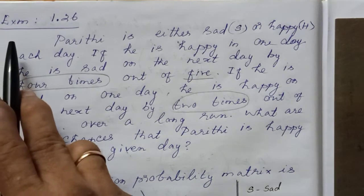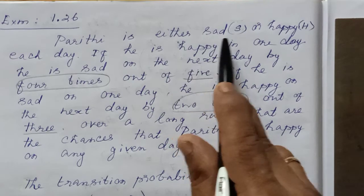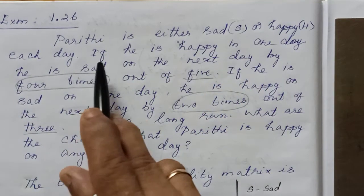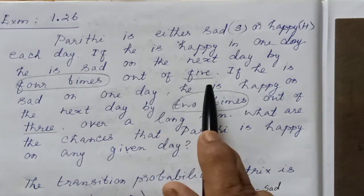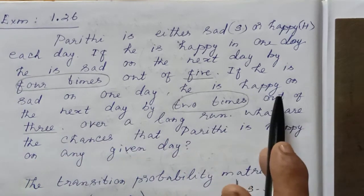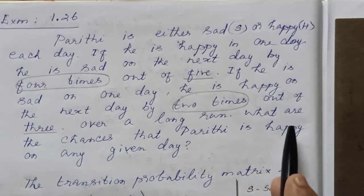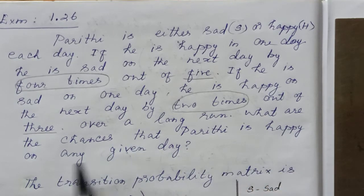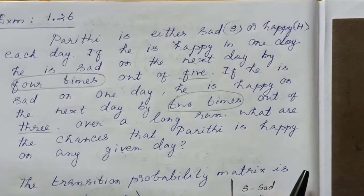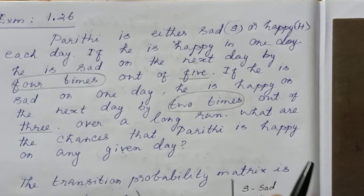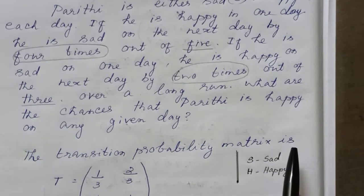Hi students, Example 1.26. Party is either sad or happy each day. If he is happy one day, he is sad the next day four times out of five. If he is sad one day, he is happy the next day two times out of three. Over a long run, what are the chances that Party is happy or sad on a given day? The transition probability matrix is T.